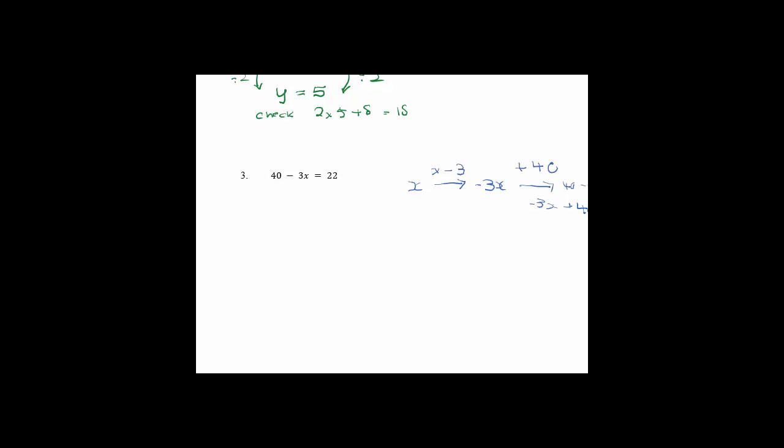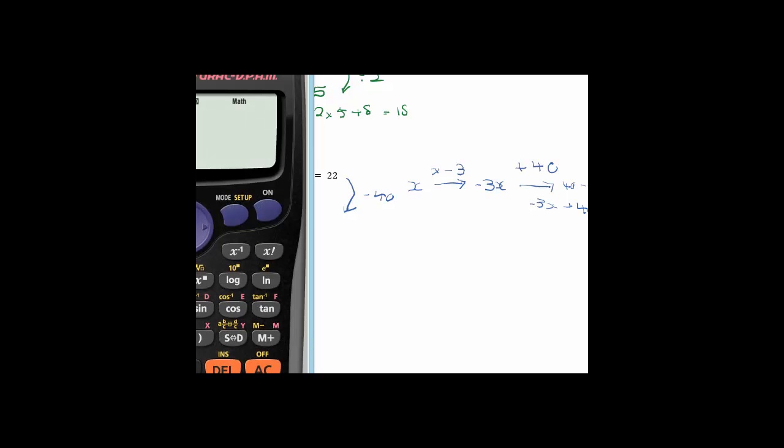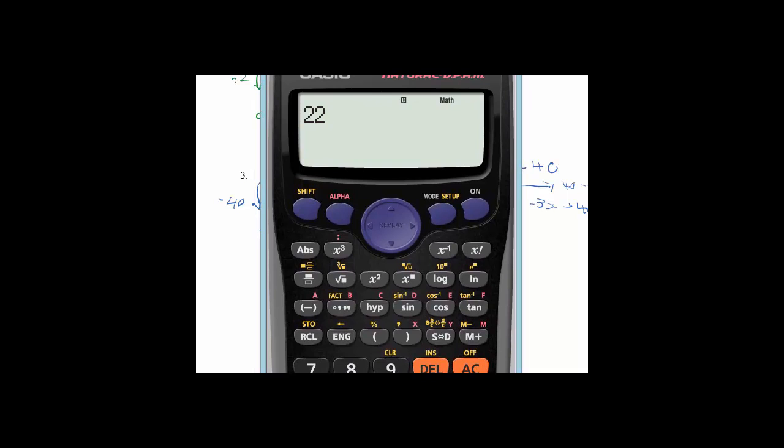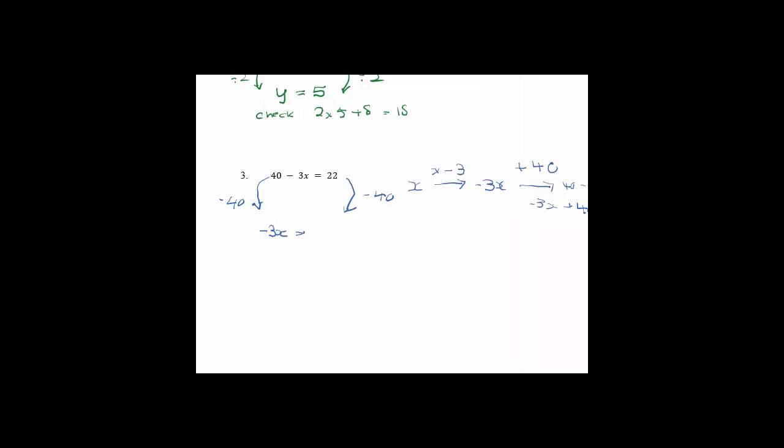So let's have a look at unpacking it. So instead of plussing 40, what we need to do is we need to do the opposite. So we're going to minus 40 from both sides. So if we think about minusing 40, what we have left here is we have minus 3x equals, and I'm doing 22 take away 40. So you're probably going to need your calculators out. And let me just pop that into the screen. We're going to do 22 take away 40. And we can see the answer is negative 18. So 22 minus 40 is minus 18.